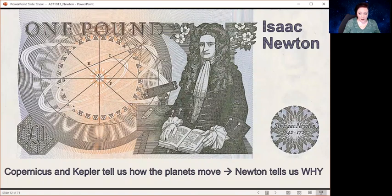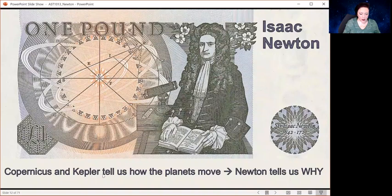That's the equivalent of having George Washington on the one-dollar bill. Now what's important about Isaac Newton is that Copernicus and Kepler looked at how the planets move and came up with descriptions for how the planets move, but they didn't know why. What Newton did was to figure out why.